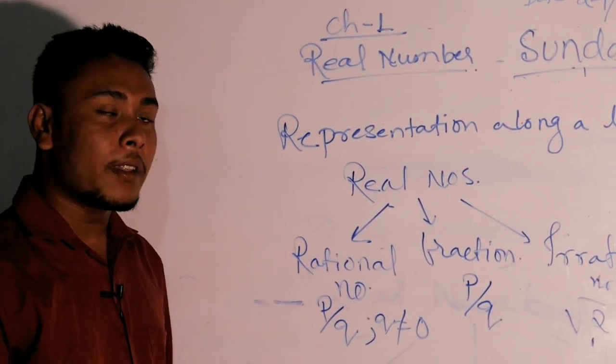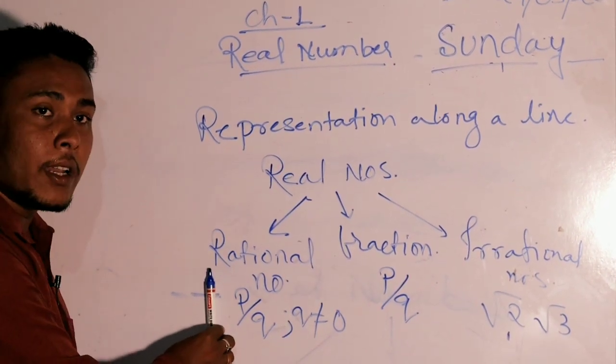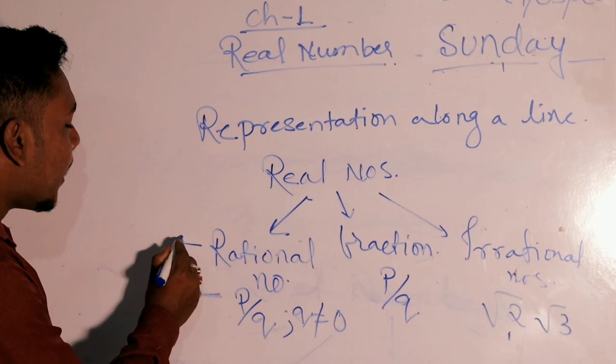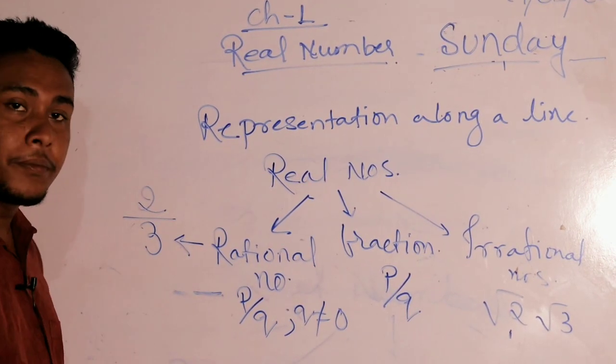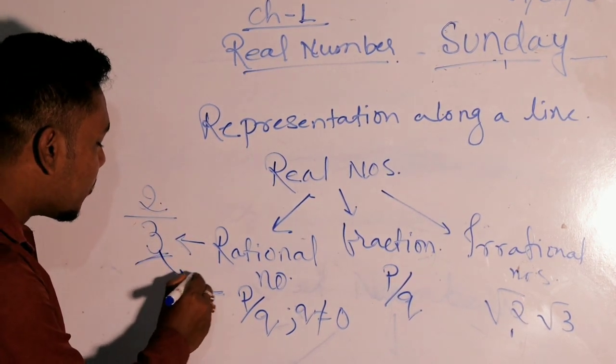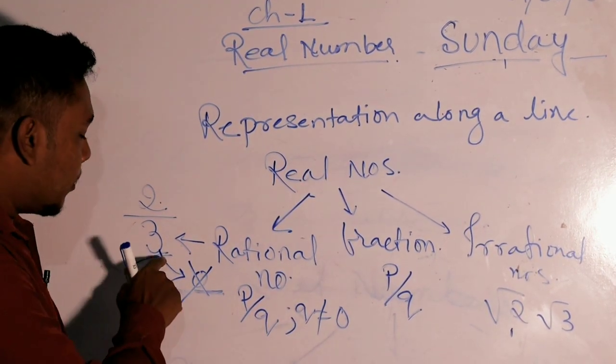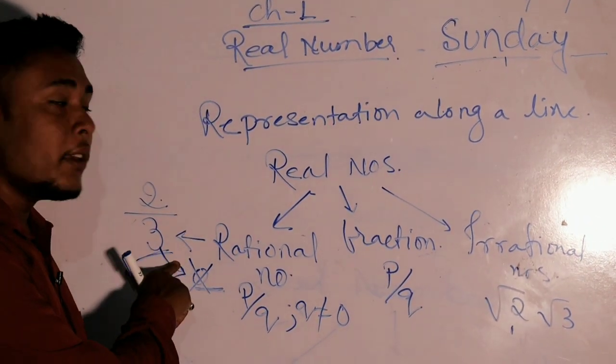So now for understanding real number further - real number consists of three parts. First is rational number, a kind of number like 2 by 3. 2 by 3 is a number where 3 is not equal to 0. Is it equal to 0? No, so it is a rational number.